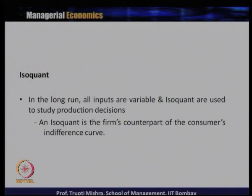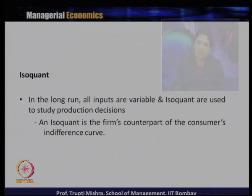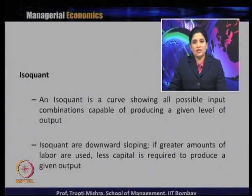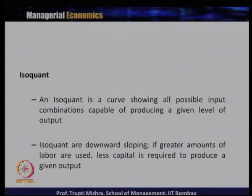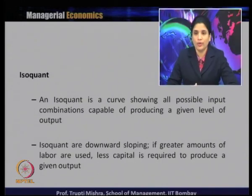If you remember the indifference curve discussed in consumer theory, in production analysis the isoquant serves the same kind of utility. In the long run, all inputs are variable and isoquants are used to study production decisions. An isoquant is the firm's counterpart of the consumer indifference curve — a curve showing all possible input combinations capable of producing a given level of output. Isoquants are downward sloping: if a greater amount of labor is used, less capital is required to produce the given output.